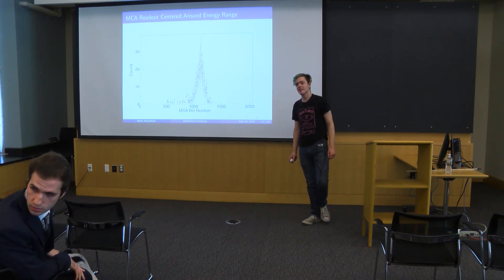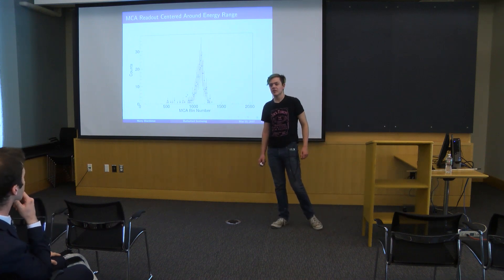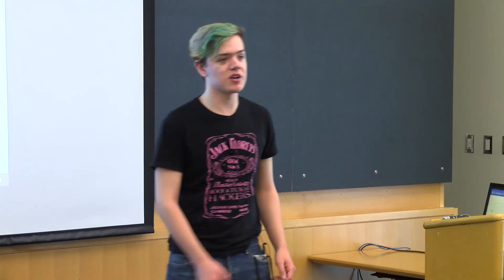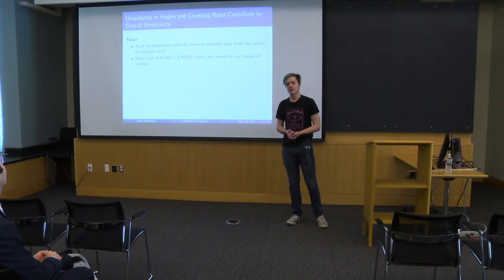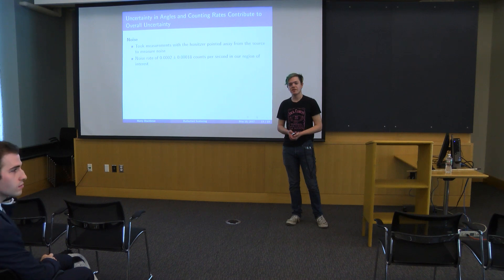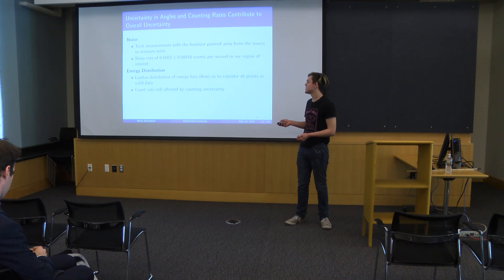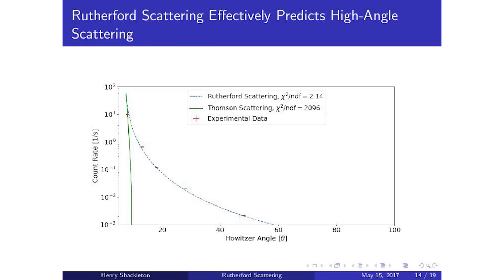The largest angle we were able to collect data from was 60 degrees, collected over the course of five days. We likely couldn't go to much higher angles because our noise rate of 0.0002 — while still smaller than the count rate at 60 degrees — would start to become dominant if we went further. In total, approximately 400 counts were collected at 60 degrees, at a rate of roughly a couple of counts per hour.